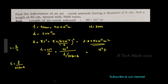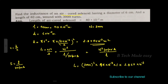Self-inductance: N is 3,000 turns. mu0 is 4 pi into 10 raise to minus 7. muR is 1 for air core. Area A is 2.827 into 10 raise to minus 3, divided by length 40 into 10 raise to minus 2 meter. The inductance is equal to 0.0794 Henry.